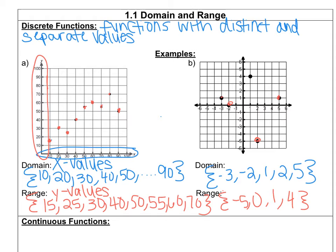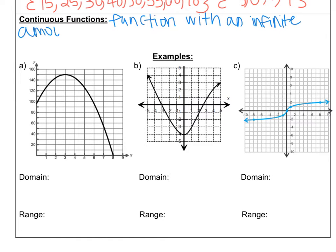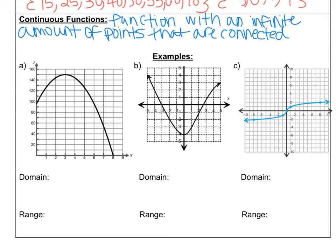So that's for discrete functions. Make sure you list out the points individually, just like what the graph looks like. Now let's come down to continuous functions. A continuous function is a function with an infinite amount of points that are connected with a smooth line.